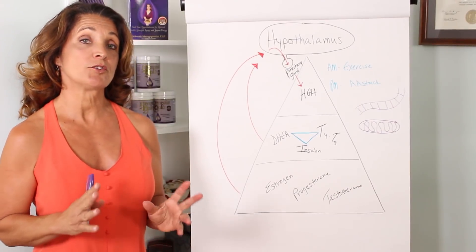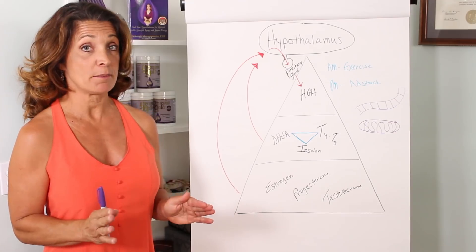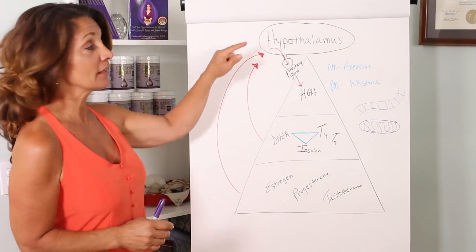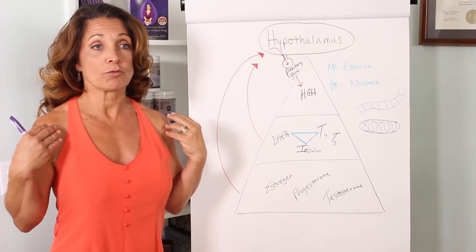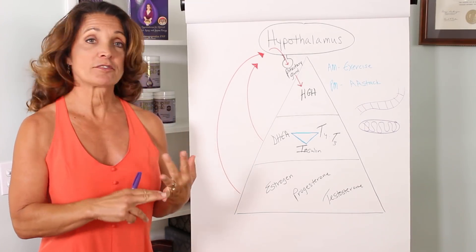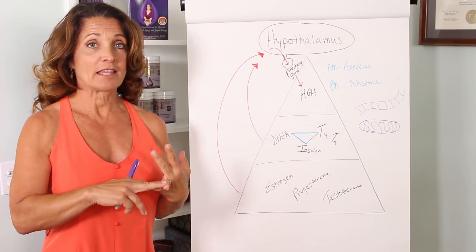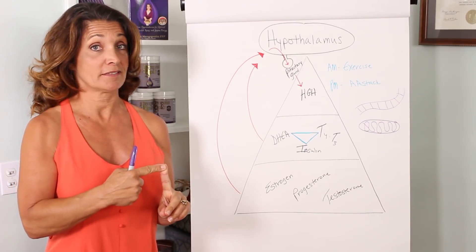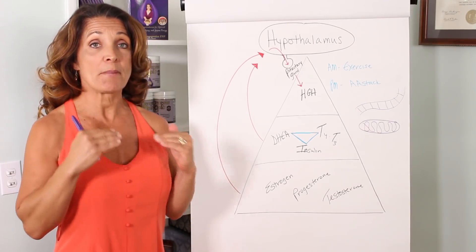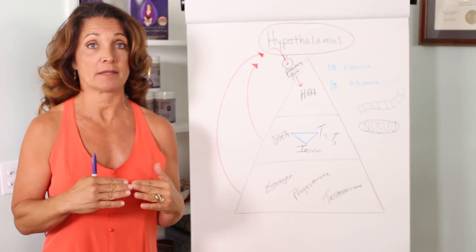So what you want to do is you want to start balancing your hormones at the base. Your hypothalamus cannot allow you to make more human growth hormone to start revving up muscle tissue growth, skeletal growth, other tissue growth because you're going to grow tumors and things that you don't want if you don't get the base of your hormones in balance.